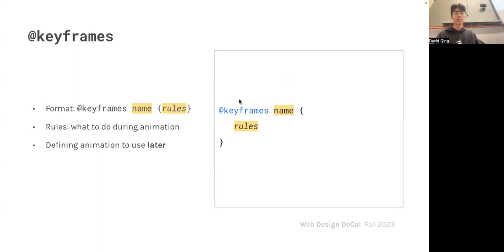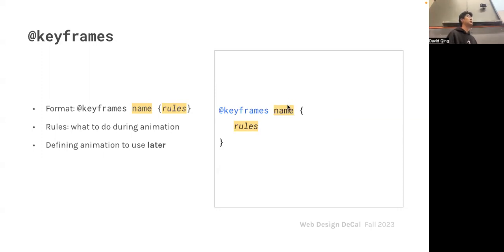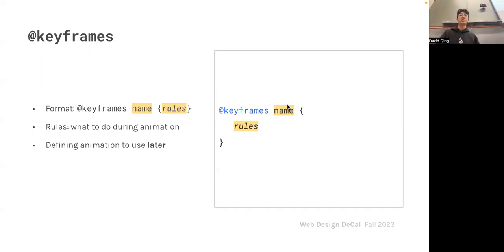For syntax, we include the `@keyframes` label, followed by a name. The syntax here is different — we're not grabbing an HTML element or a class or ID; we're defining something that lives within the CSS file. The name can be whatever you want, but follow naming conventions so the name gives a clear indication of what it does. For example, if you want an element to slide up, you might just name it 'up' or 'slide-up'. Within the rules we'll define the CSS properties.